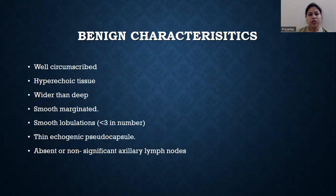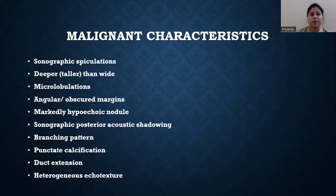The imaging characteristics of benign lesions were: well circumscribed, hyperechoic tissue, wider than taller, smooth marginated, smooth lobulations less than 3 in number, thin echogenic pseudocapsules, and absent or non-significant axillary lymph nodes.